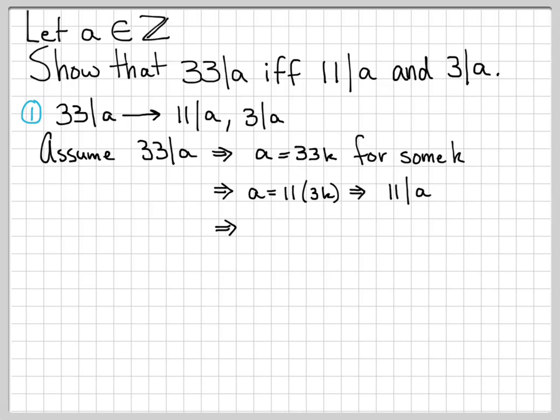I could also go back to my original expression of a equals 33k and write it as 3 times 11k. And again, looking at this, it's obvious that 3 divides a. So the first part's done. 33 divides a implies that 11 divides a and 3 divides a.